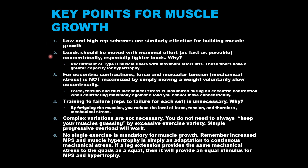Second, loads should be moved with maximal effort as fast as possible concentrically, especially lighter loads. Why? Recruitment of type 2 muscle fibers requires maximum effort lifts — it's not just the weight you're lifting that dictates type 2 fiber recruitment, it is how you lift that weight. If you're doing lighter loads with sub-maximal effort, you may not be recruiting those type 2 muscle fibers, which have the greatest capacity for hypertrophy. Especially with lighter loads, give maximum effort and lift as fast as possible to effectively recruit these type 2 fibers.